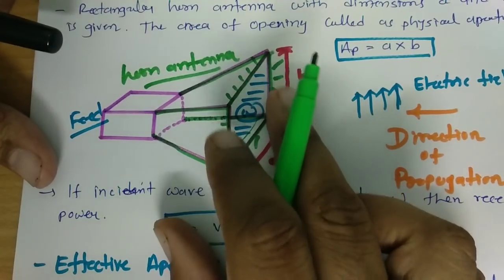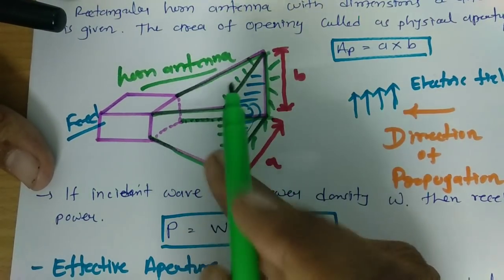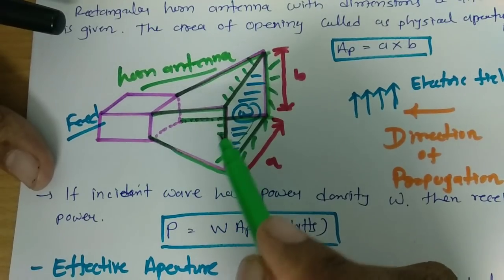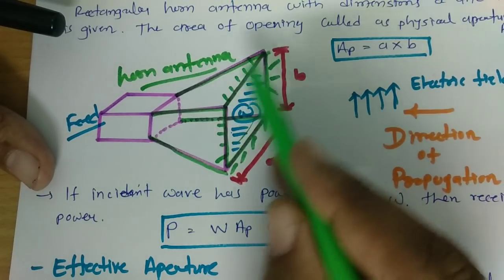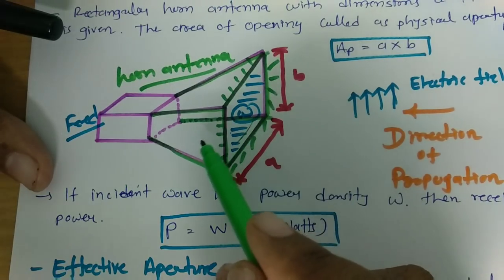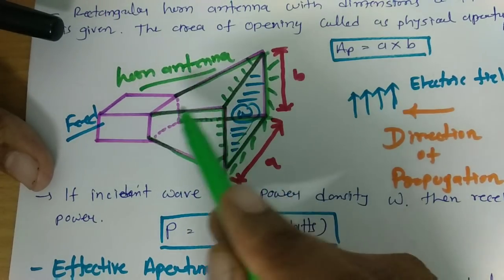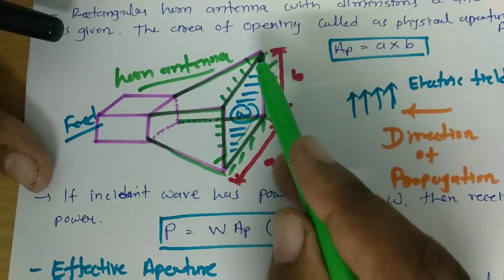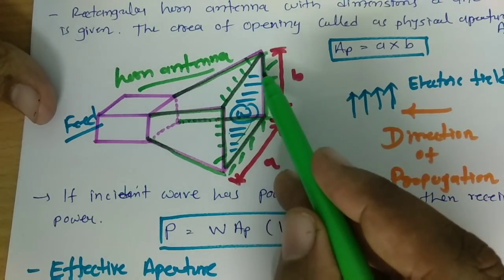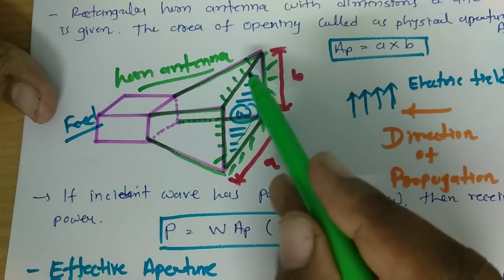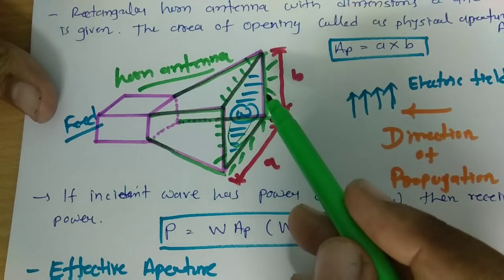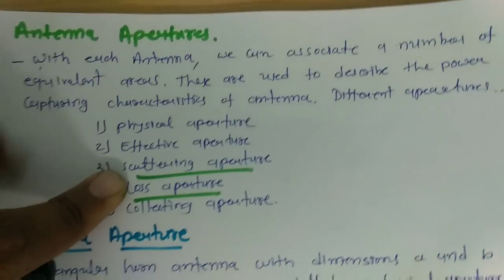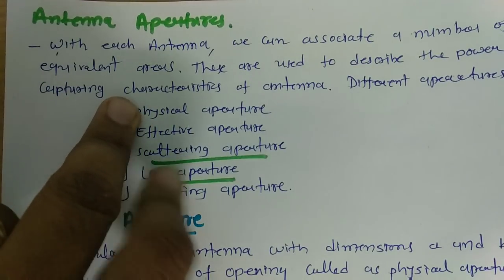Scattering happens most of the time because of edges — if edges are not proper or not sharp, there will be scattering from the edges of the antenna. Loss can happen because of conducting material or dielectric material in any antenna; here we have conducting material as the horn, so there could be loss because the electric field is not zero at the wall. Collecting aperture shows how much electromagnetic waves the antenna can collect at its opening. That is how different sets of apertures explain the capturing characteristic of an antenna.